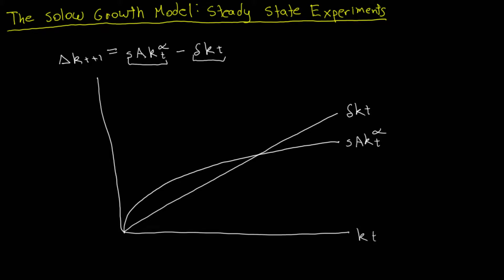A steady state occurs when all endogenous variables of the model are constant. In a steady state, the change in capital per capita between periods must equal zero, which implies investment equals depreciation. So the investment curve intersects the depreciation line at the steady state, giving us the steady state level of capital per capita, K*. The closed-form solution derived in the previous video is K* = (S·A / δ)^(1/(1−α)).